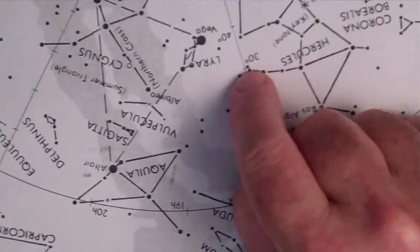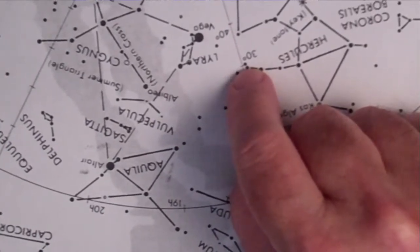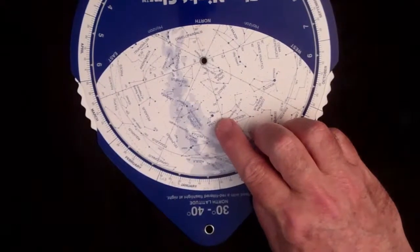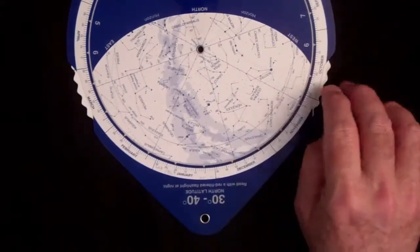Alright, so to measure the distance between the two stars, we're going to need a piece of paper to trace the distance between them. So let's go get a piece of paper.